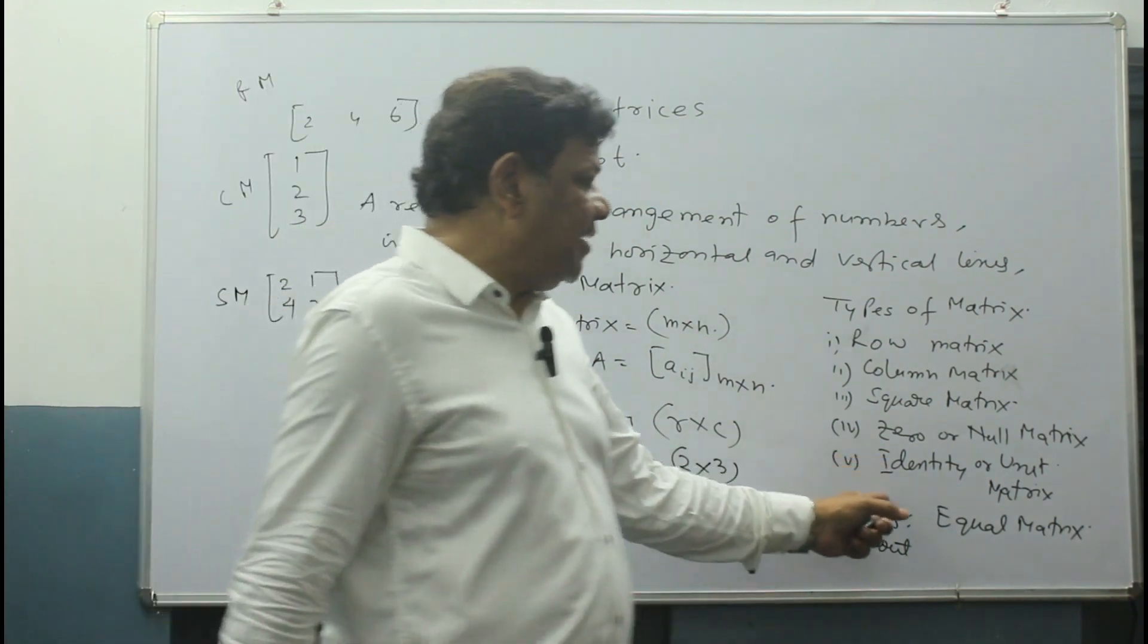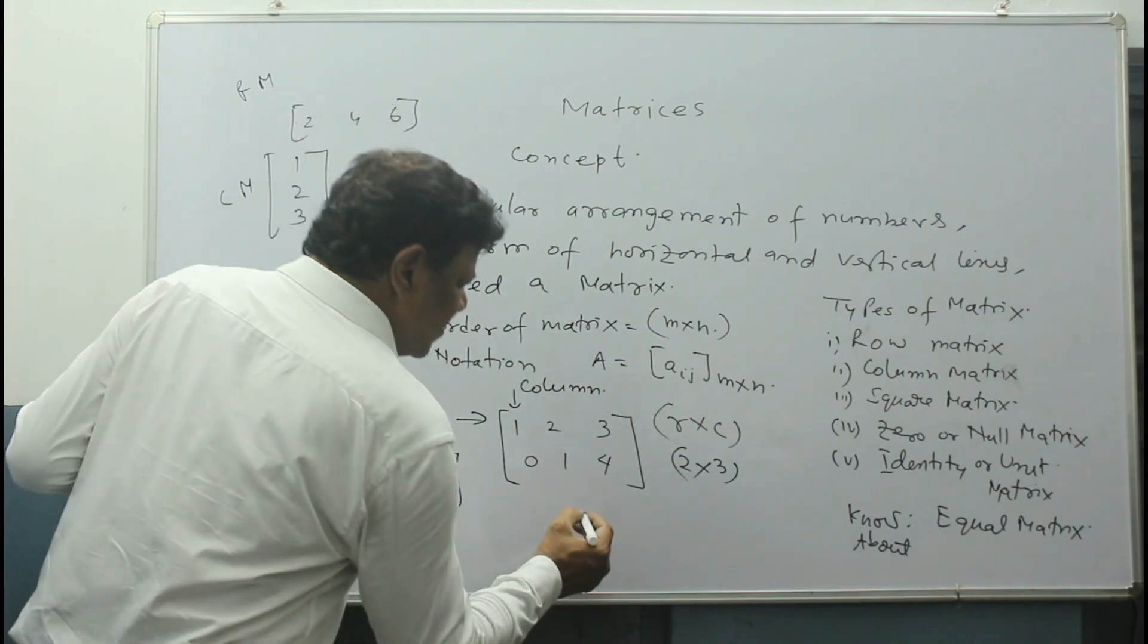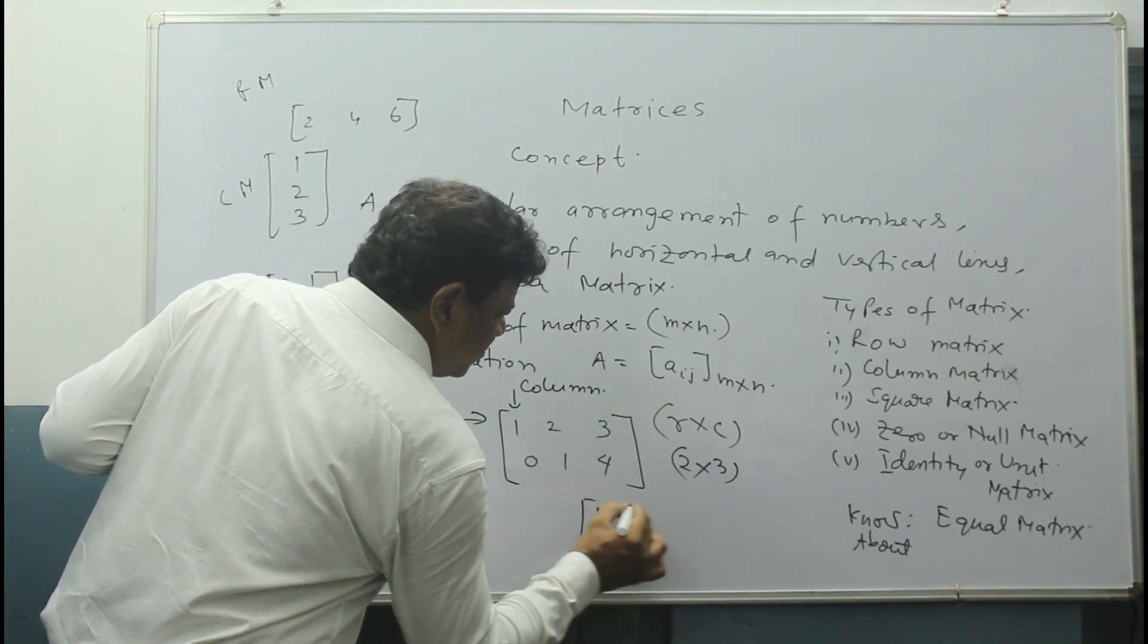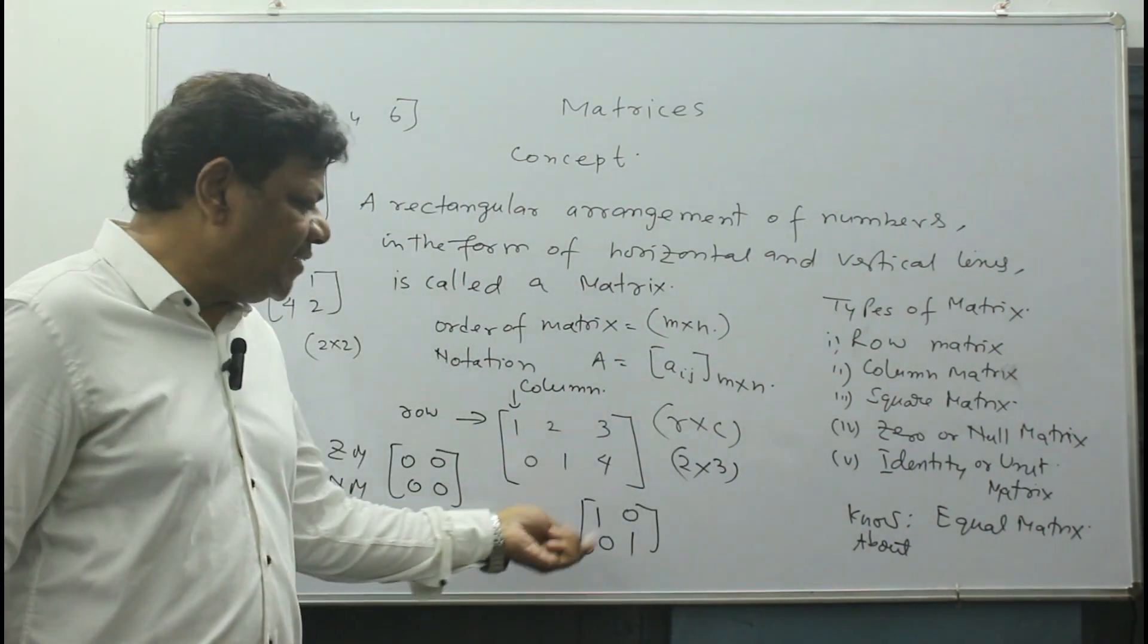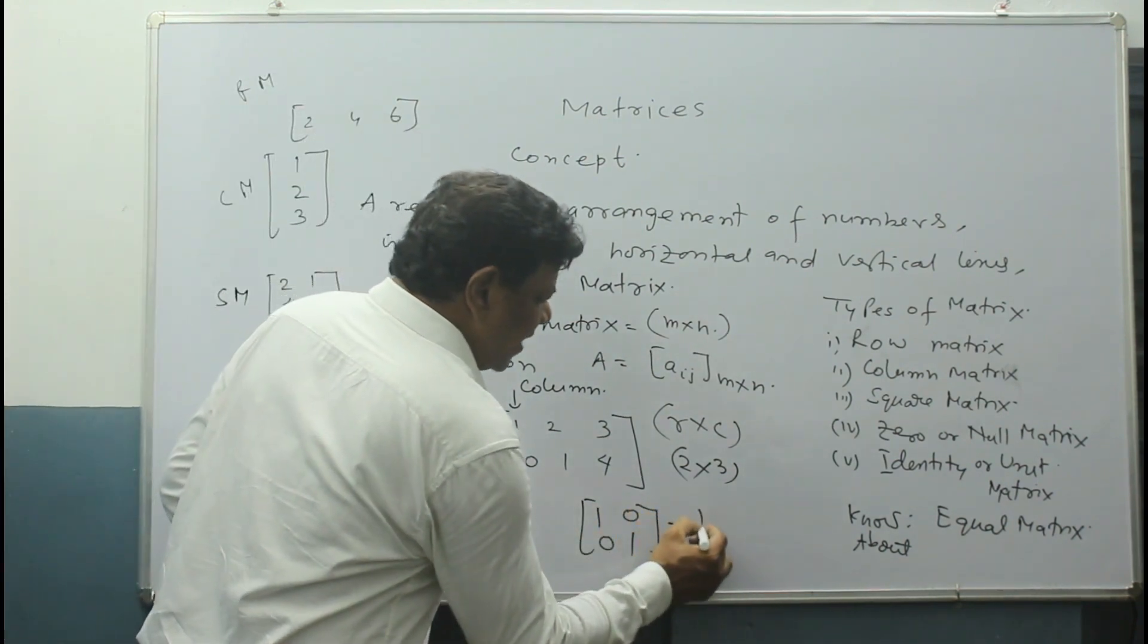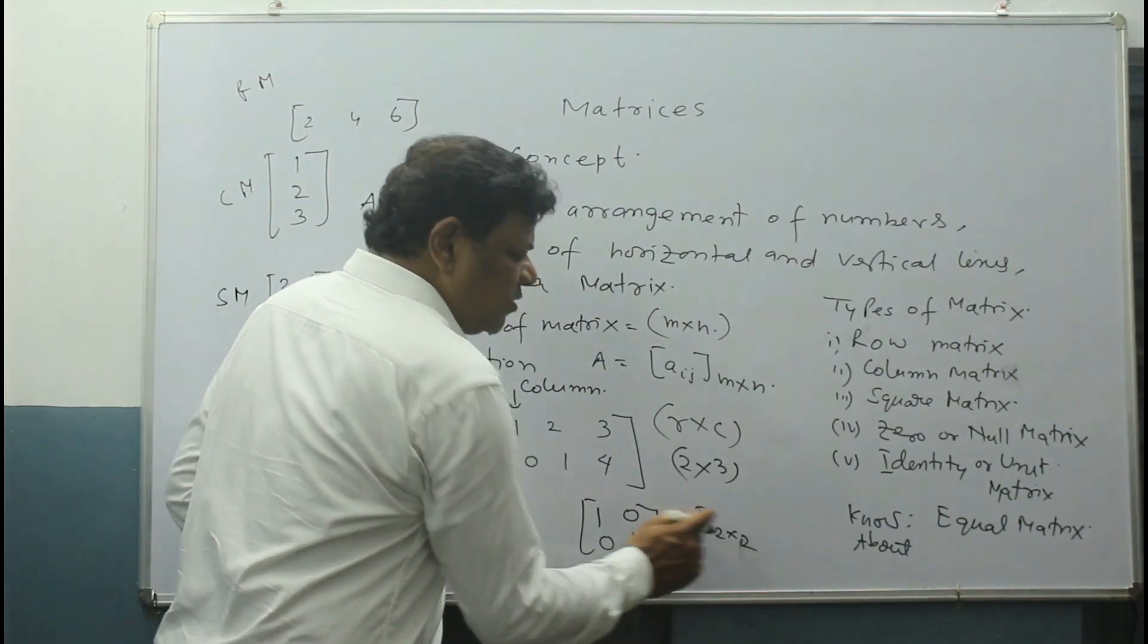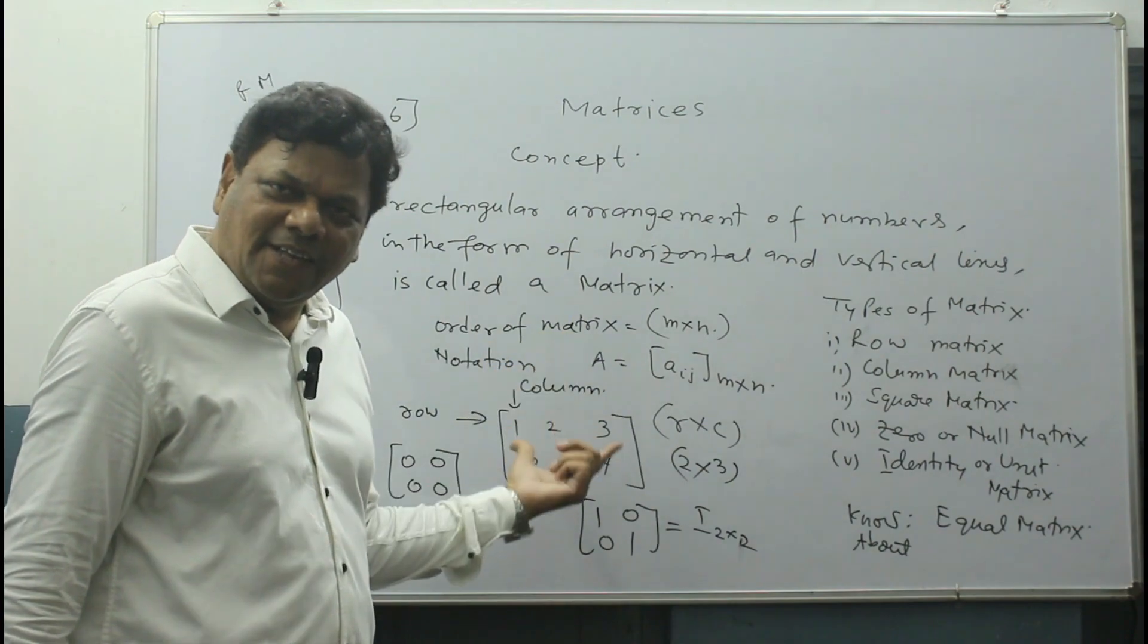Another one is identity or unit matrix. What is identity matrix? We get 1, 0, 0, 1. That is called identity or unit matrix. We represent it with I like this. I₂ₓ₂ means identity matrix of 2×2, which means row 2, column 2. I think this is clear.